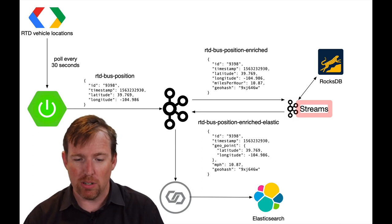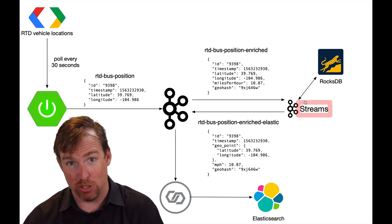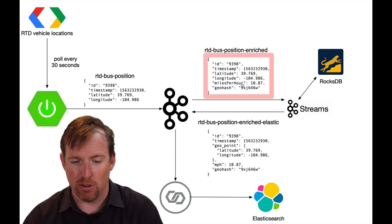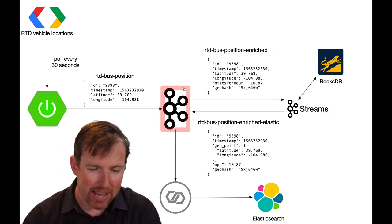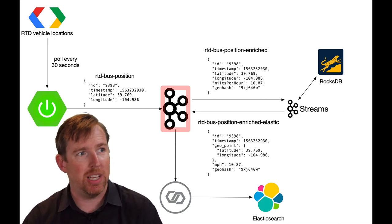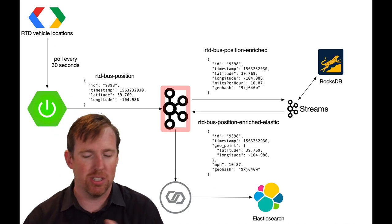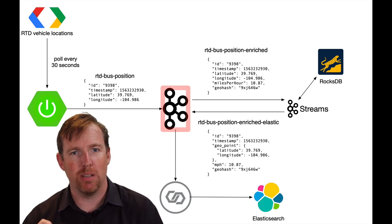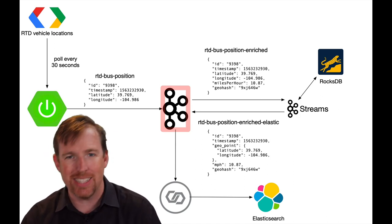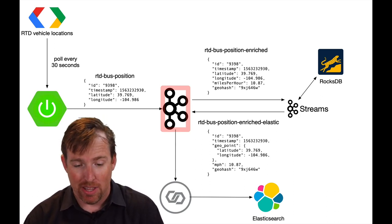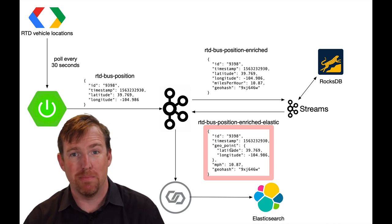From RocksDB, the Kafka Streams job produces an enriched feed — I've added miles per hour and I'm writing that back to Kafka. Finally, I want to persist this into Elasticsearch so I can slice and dice it over time and do visualisations. Elastic needed the geo locations formatted differently, so I've got a snippet in my Kafka Streams app that converts the longitude and latitude into GeoJSON format.